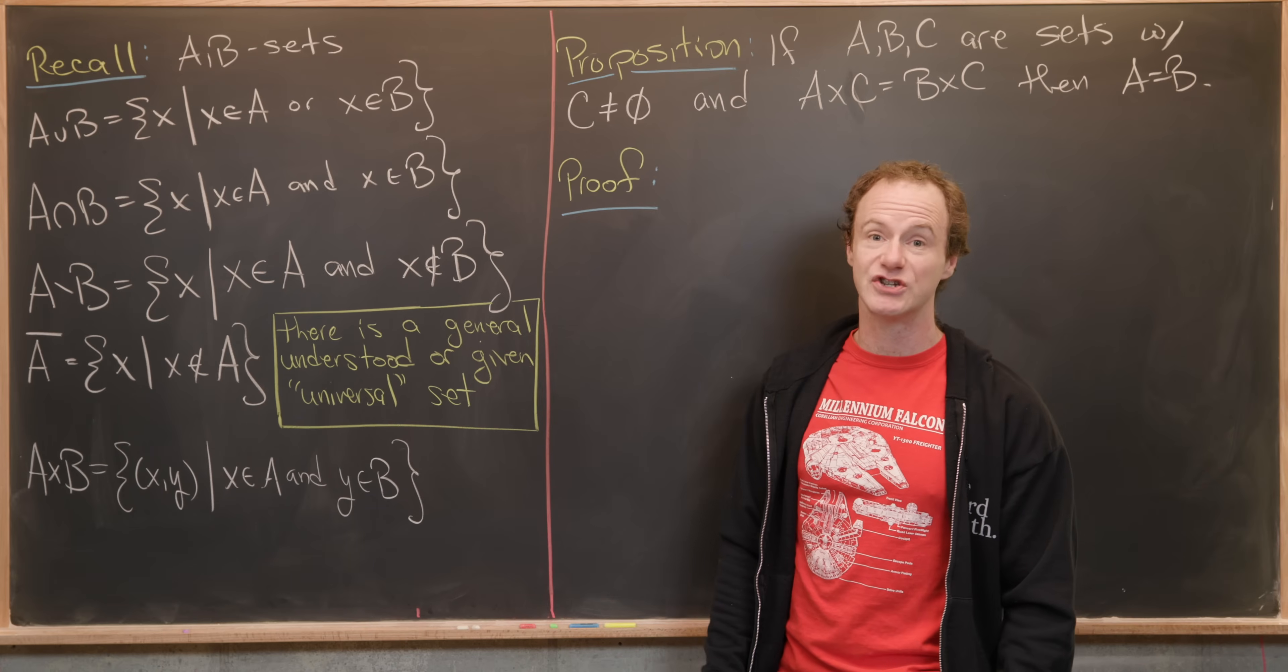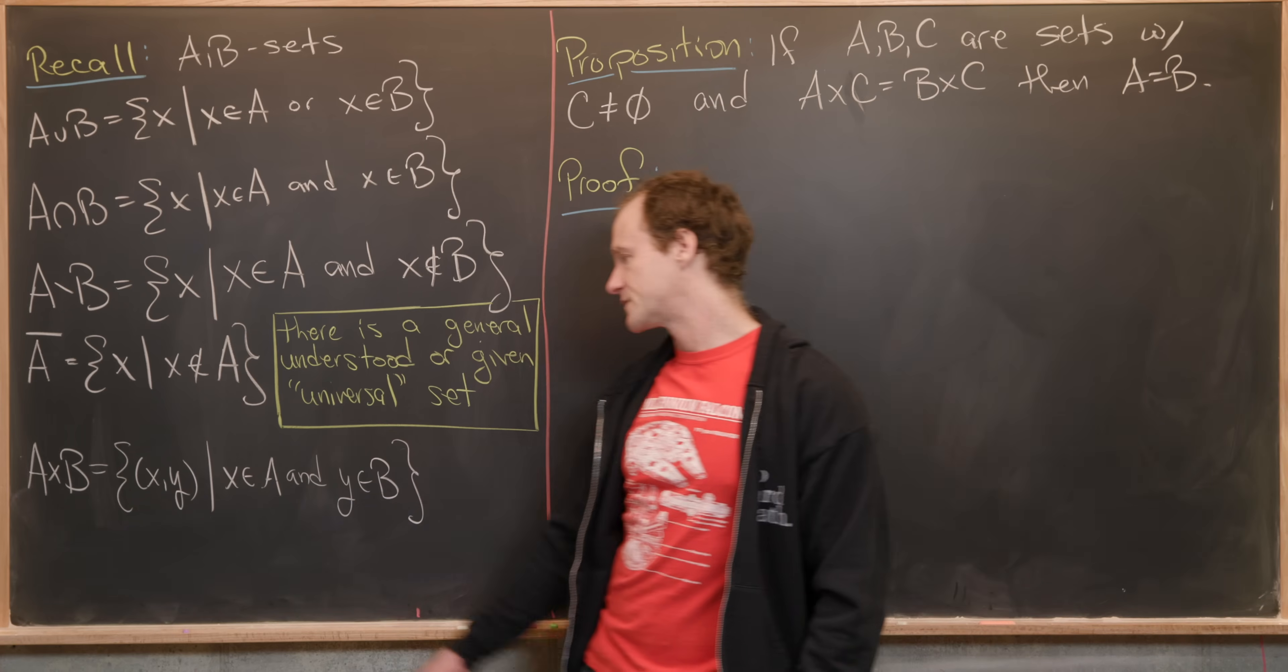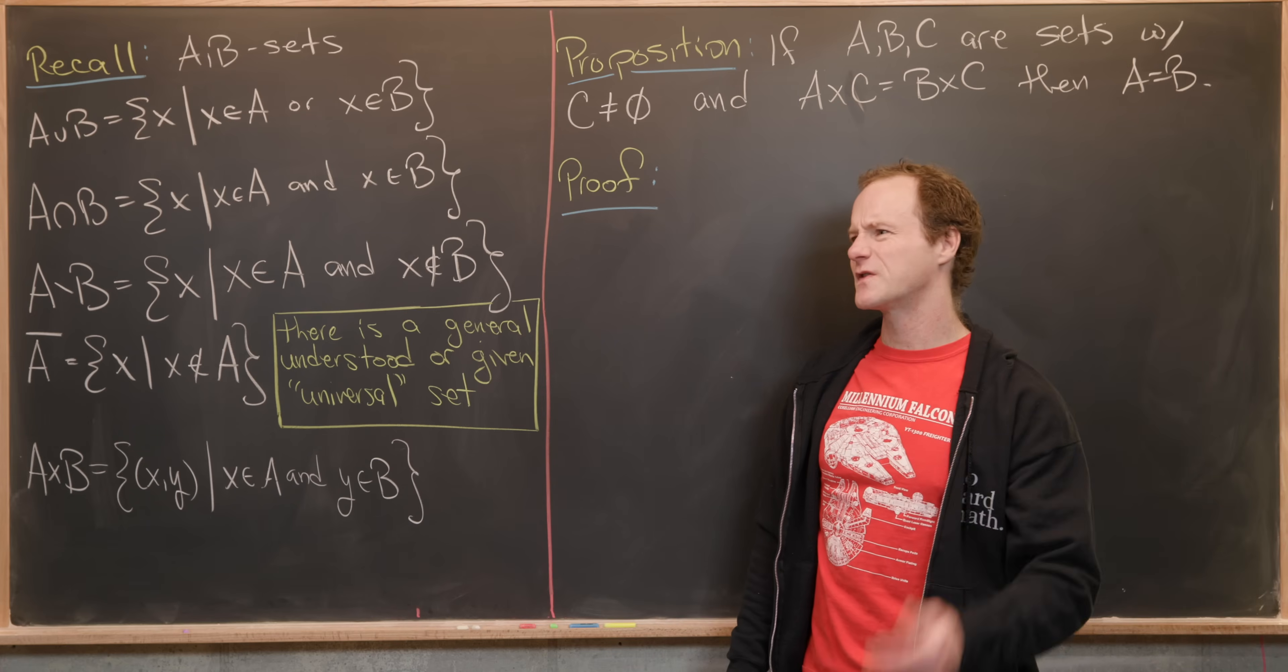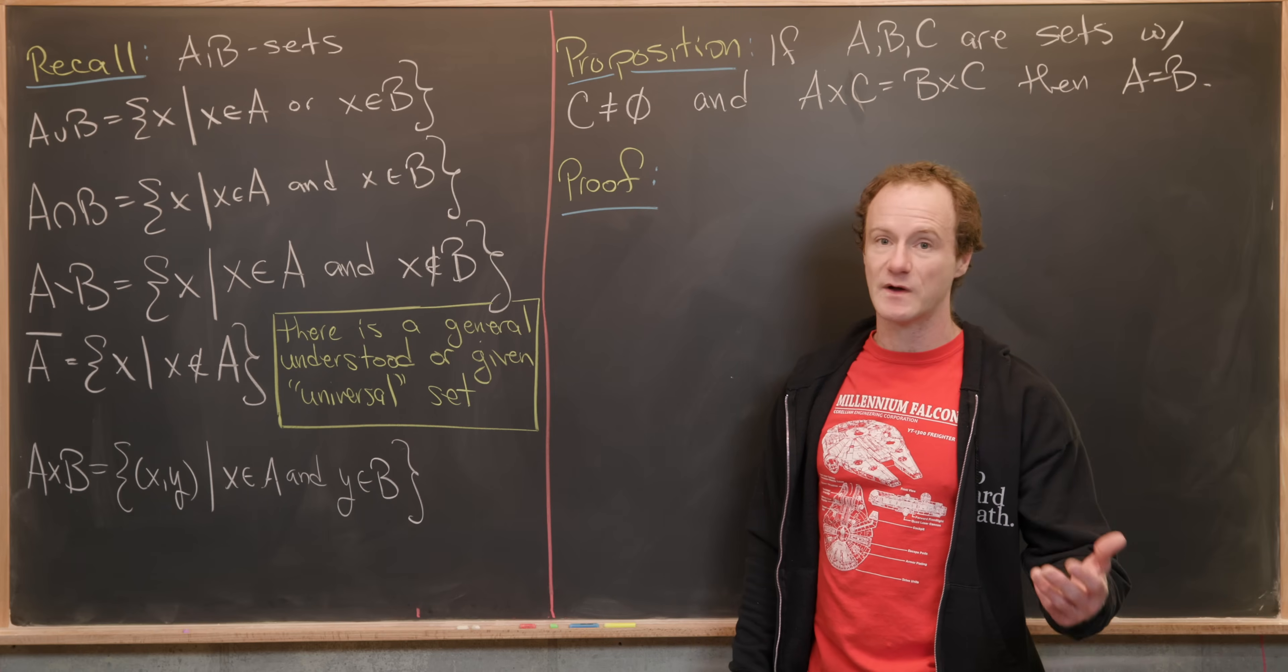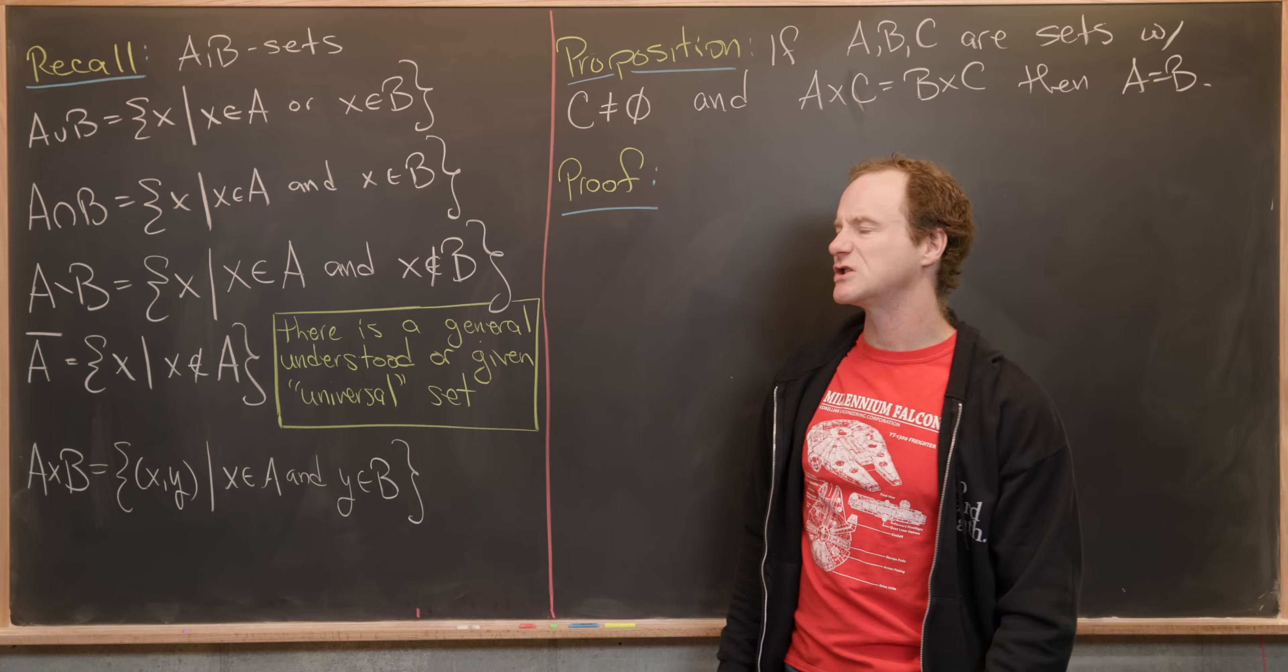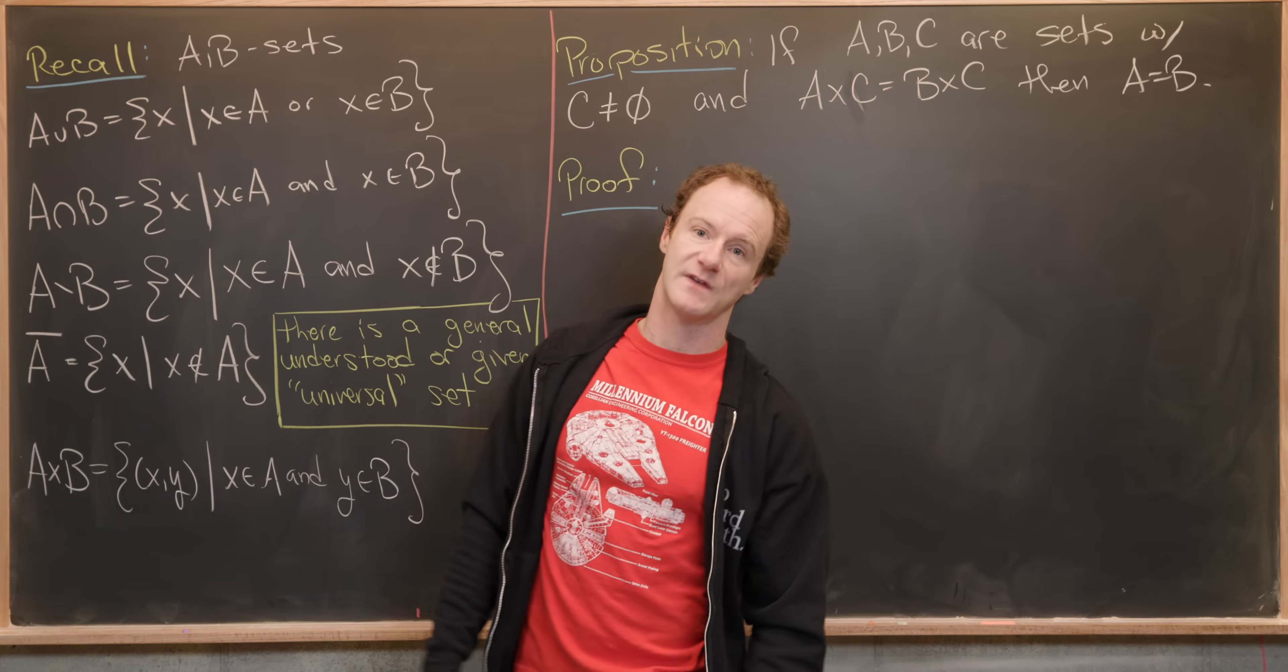Next we've got the Cartesian product of A and B, so that's A cross B. Those are all ordered pairs X and Y such that X is in A and Y is in B. I would say there's maybe a few more set operations, the next one would maybe be the disjoint union. I want to point out that we did a bunch of examples of these in previous videos if you want to brush up on those facts.